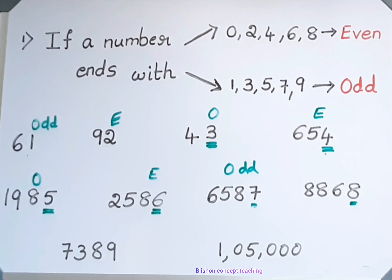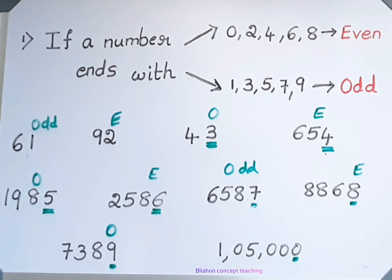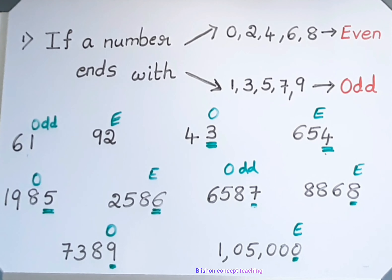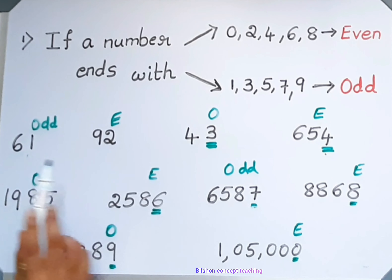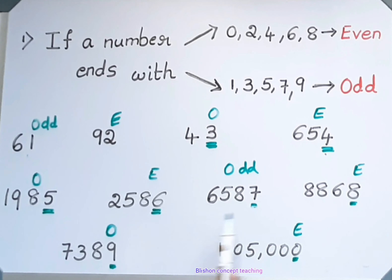The ending digit is 8, so it is an even number. The last digit is 9, so it is an odd number. The last digit is 0, so it is an even number. While checking if a number is even or odd, we just have to look at the ending number or the last digit — the unit's place. Thank you.